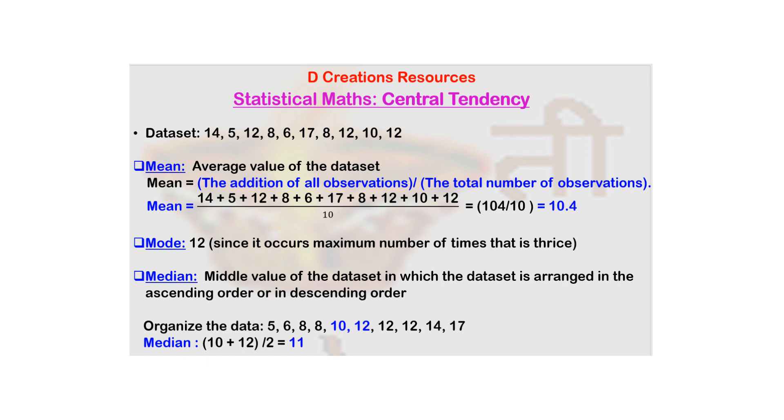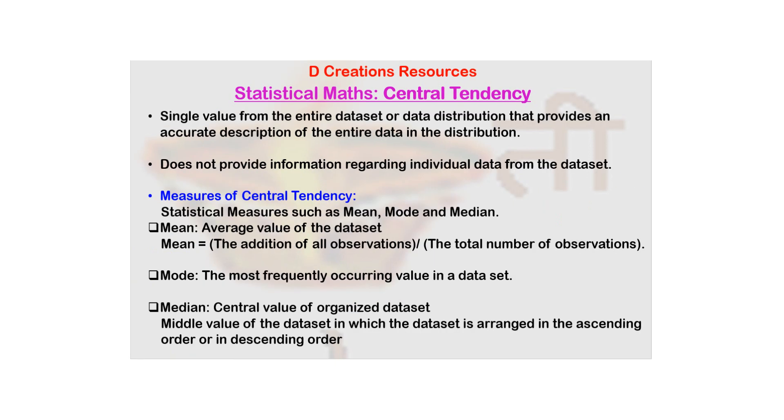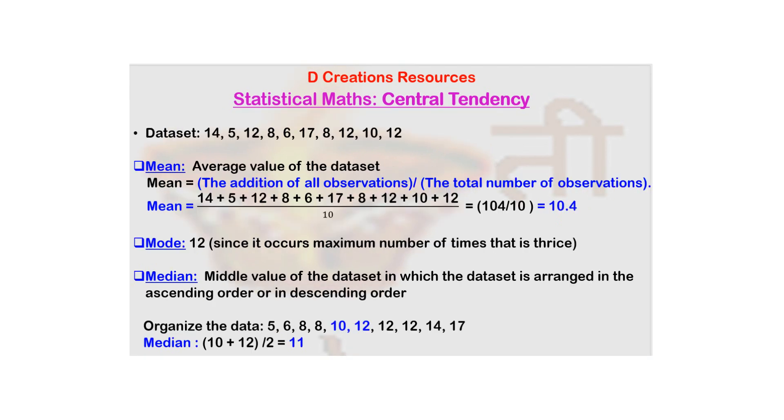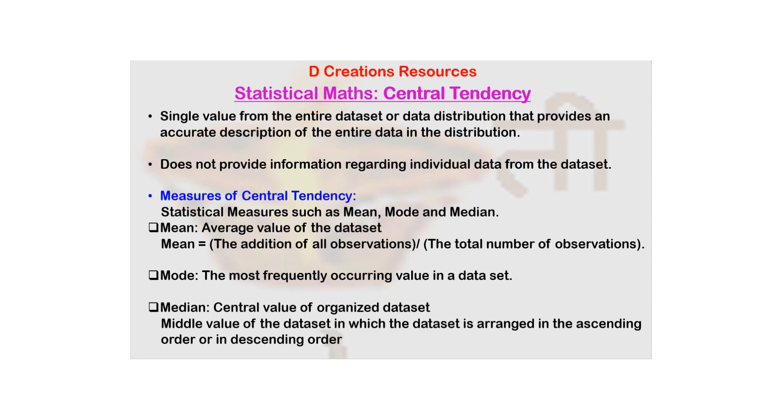So mean is one of the measures of central tendency. Then there is mode. What is mode? Mode is the most frequently occurring value in a data set. So now if you see this data set, which number is occurring maximum number of times? It's 12, right? 12 is occurring three times. Even though 8 is also occurring multiple times, it's just occurring two times. So 12 is the answer, or 12 is the mode, because it is the most frequently occurring value in a data set.